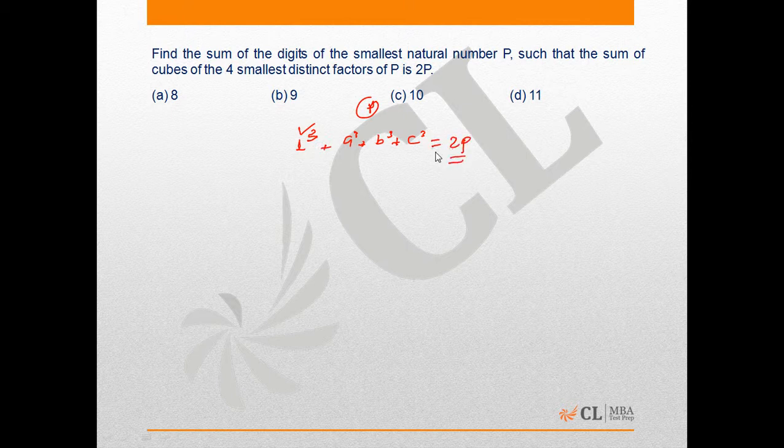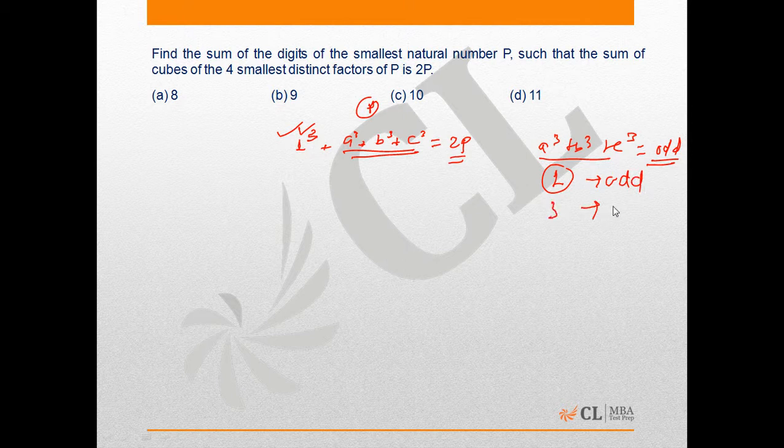Here it can be noted that 2P is an even number. Here 1 is odd, so from this observation we can say that A³ + B³ + C³ has to be odd, and this is only possible when either one out of these three is odd or all three are odd.